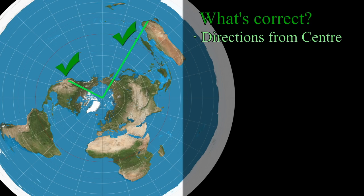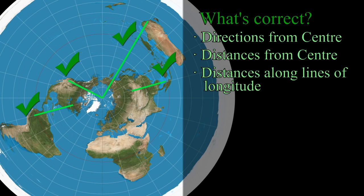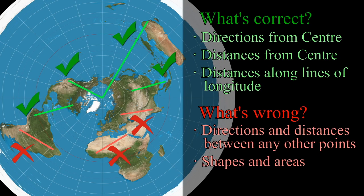In fact, the centre point is the only point on this projection where one can determine the direction and distance to any other point correctly. For other points, only distances along lines of longitude will be consistent with reality. Distances and directions between any other two points will be incorrect. Consequently, shapes and areas are also incorrect, and become increasingly distorted the further from the centre of the map they are.